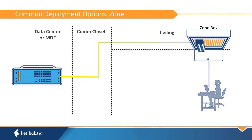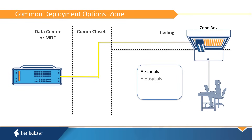A zone or area deployment of ONTs provides a deep fiber solution with the same security as a com closet installation. Here, fiber extends beyond the com closet but not all the way to the desktop. Zone boxes are located near drop locations, cutting down on copper cabling. The zone deployment is more flexible for network growth but has the same network security as the com closet deployment. Zone deployments work well in schools, hospitals, hotels, stores, and anywhere that an untrusted environment exists.